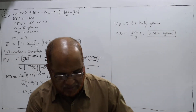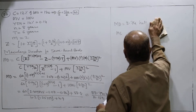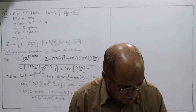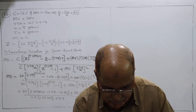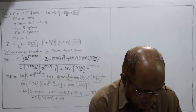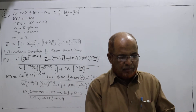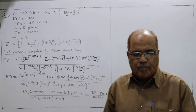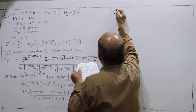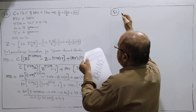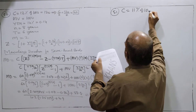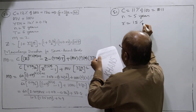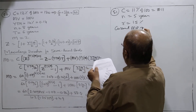Now problem number 51: A rupees 100 par value bond bearing a coupon rate of 11% matures after five years. The expected yield to maturity is 15% and the present market price is rupees 82. Can the investor buy the bond? C equals 11% of 100, which is rupees 11. N equals five years, R equals 15%, and the current market price equals rupees 82.